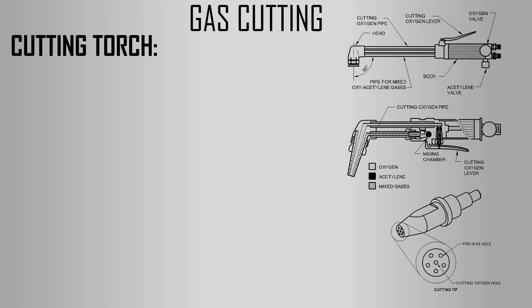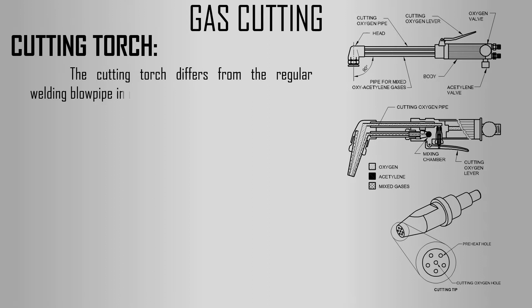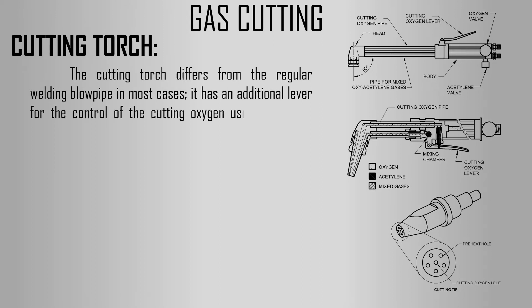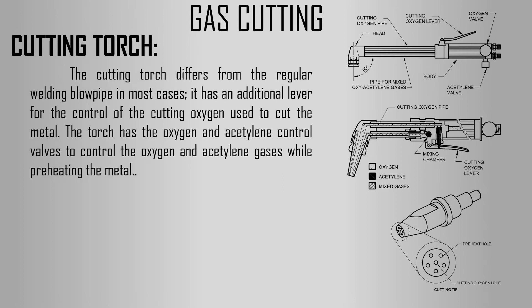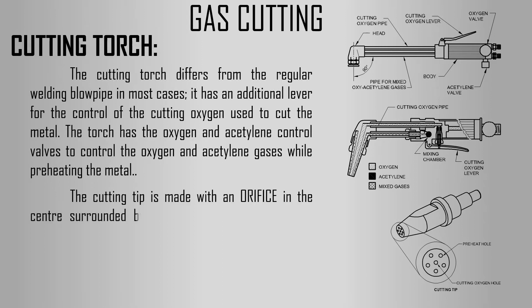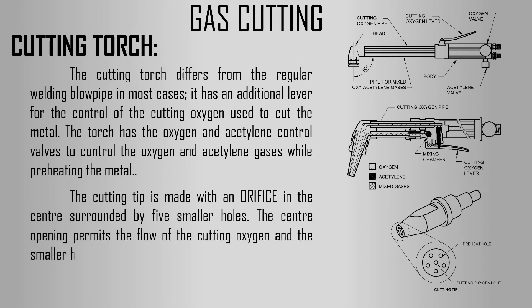Now we are going to see the definition of cutting torch. The cutting torch differs from the regular welding blowpipe in most cases. It has an additional lever for the control of the cutting oxygen used to cut the metal. The torch has oxygen and acetylene control valves to control the oxygen and acetylene gases while preheating the metal. The cutting tip is made with an orifice in the center surrounded by five smaller holes. The center opening permits the flow of the cutting oxygen and the smaller holes are for the preheating flame.